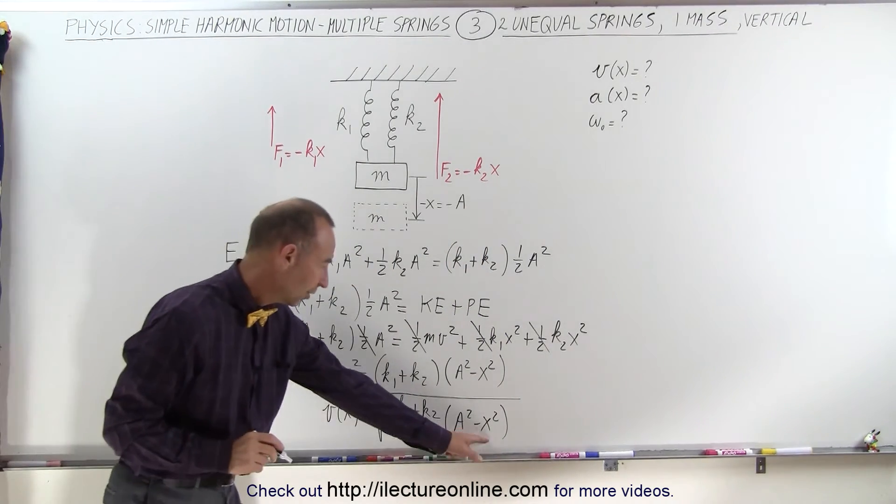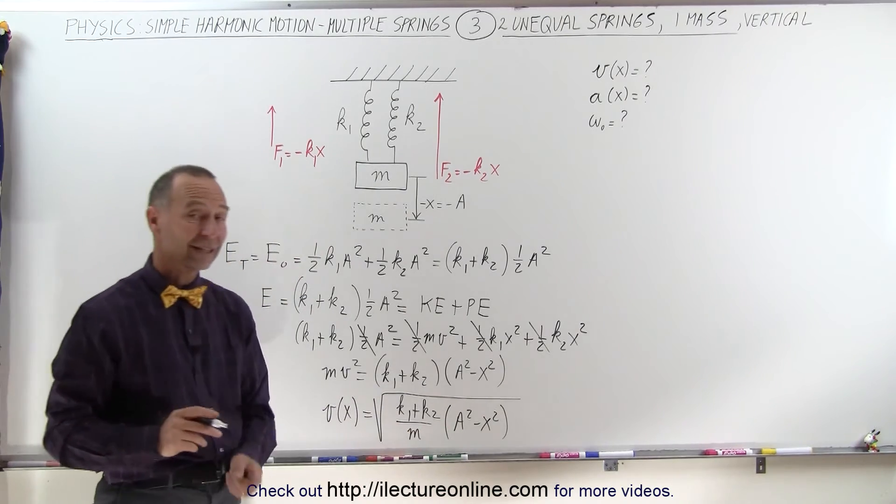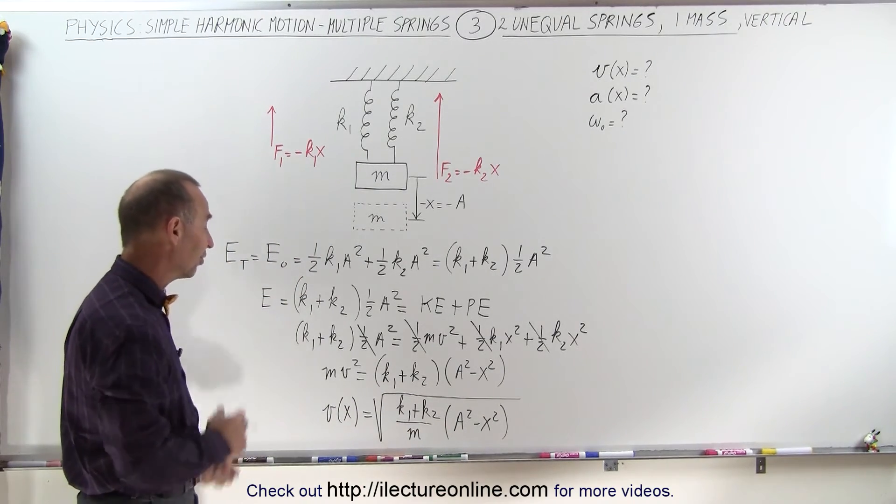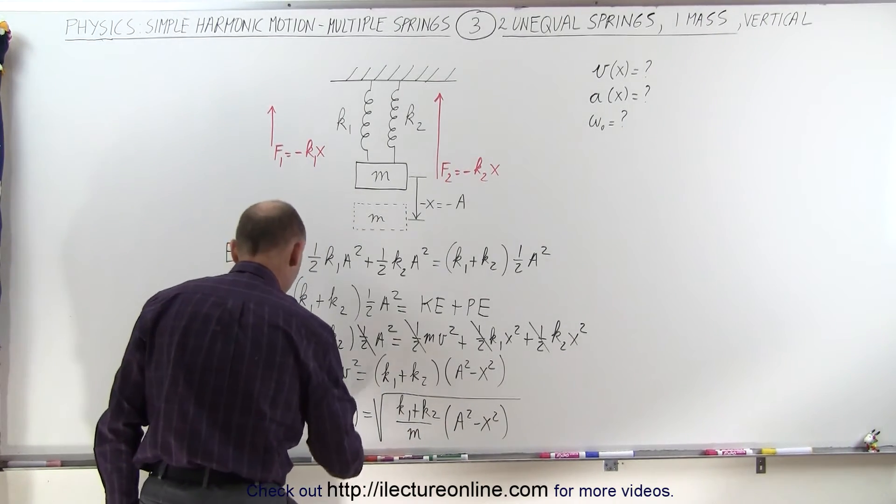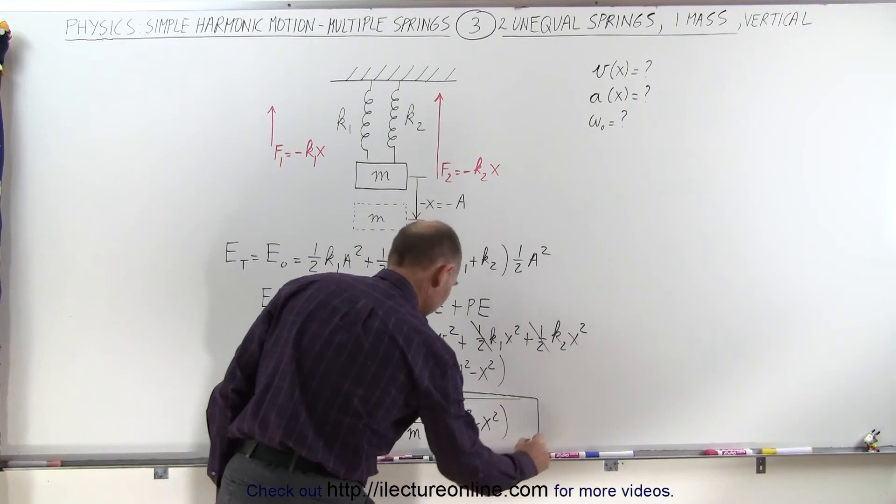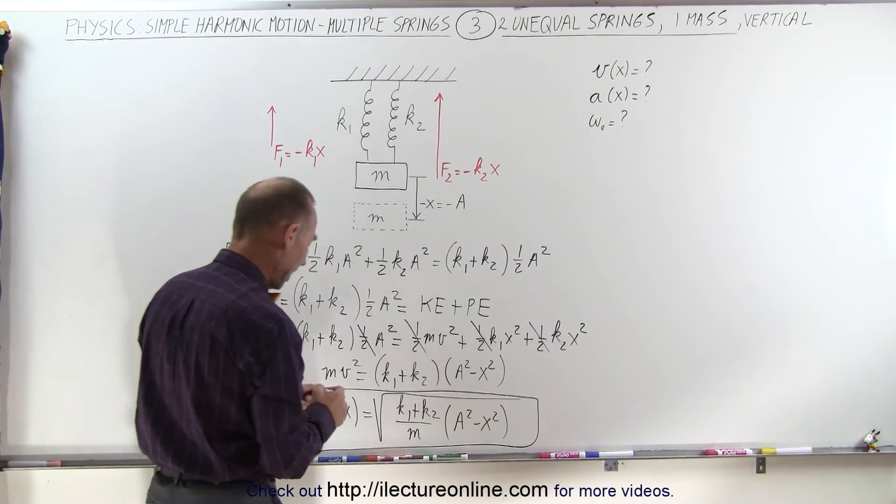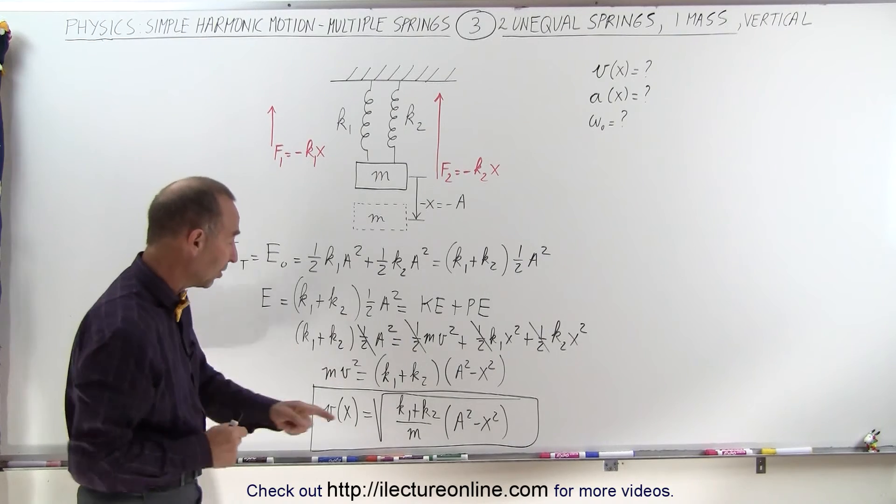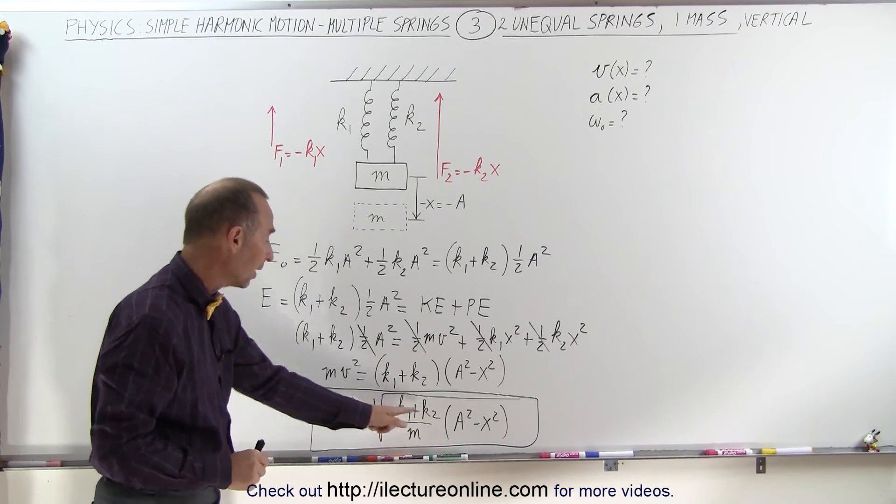Notice when x goes to zero, that's when you have maximum velocity. When x is equal to A, that's when you have zero velocity. This is now becoming familiar territory. Notice this looks very similar as if we had one spring, but with two springs like this, we simply have to add the spring constants together.